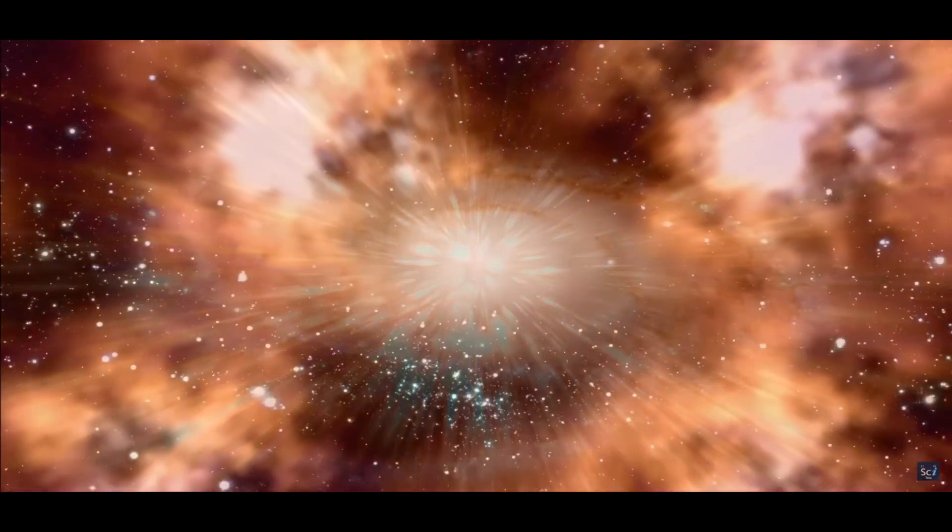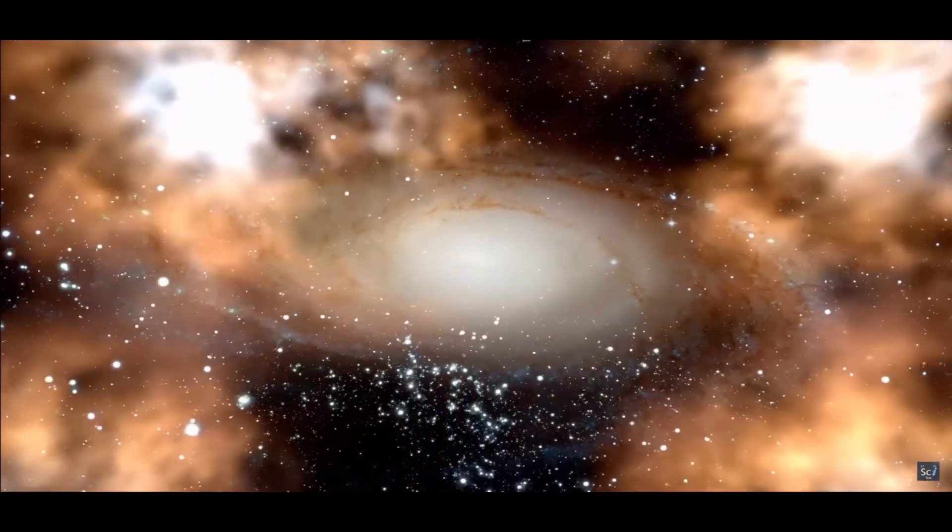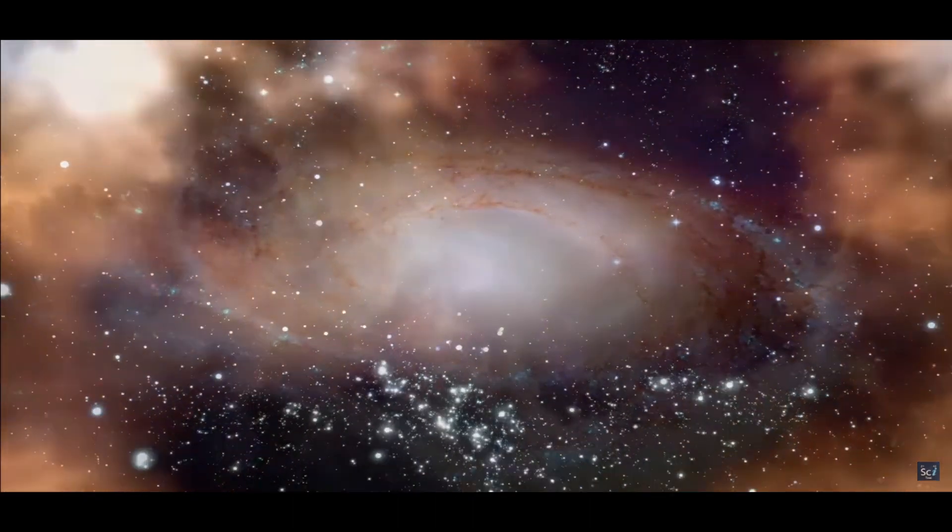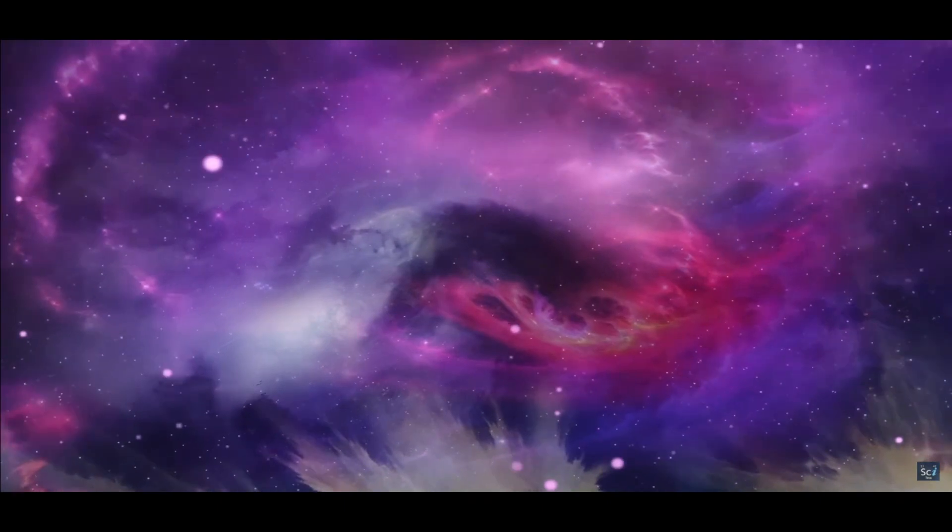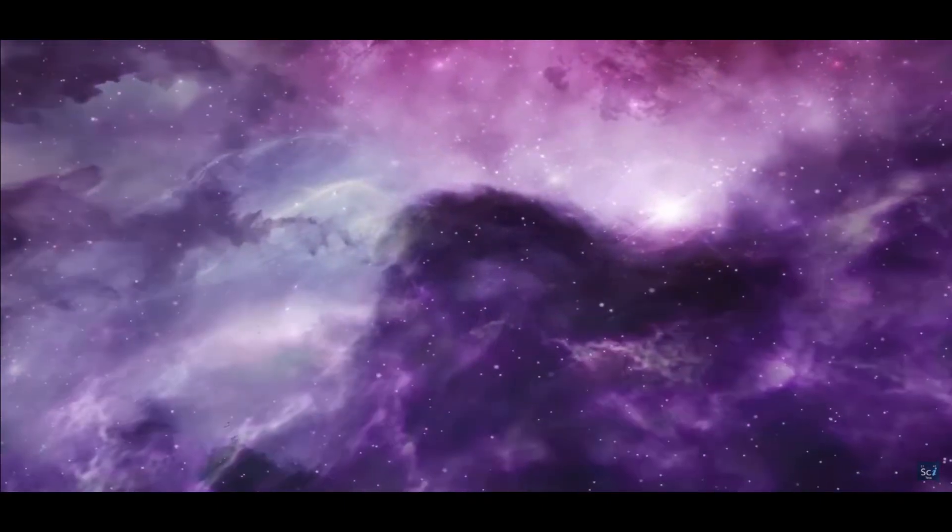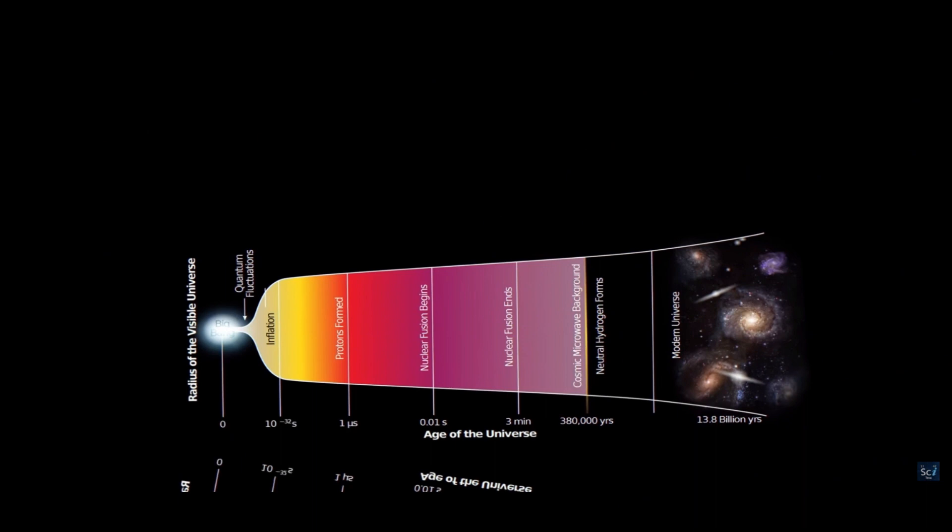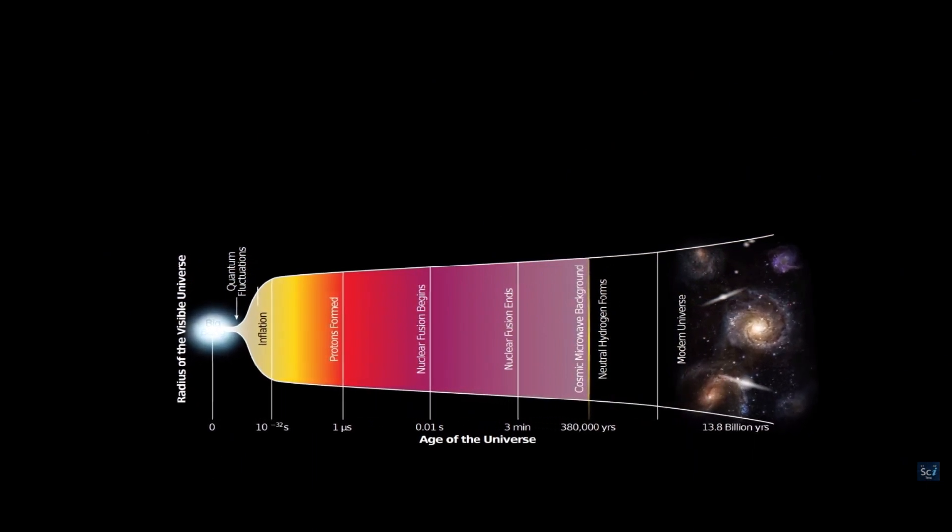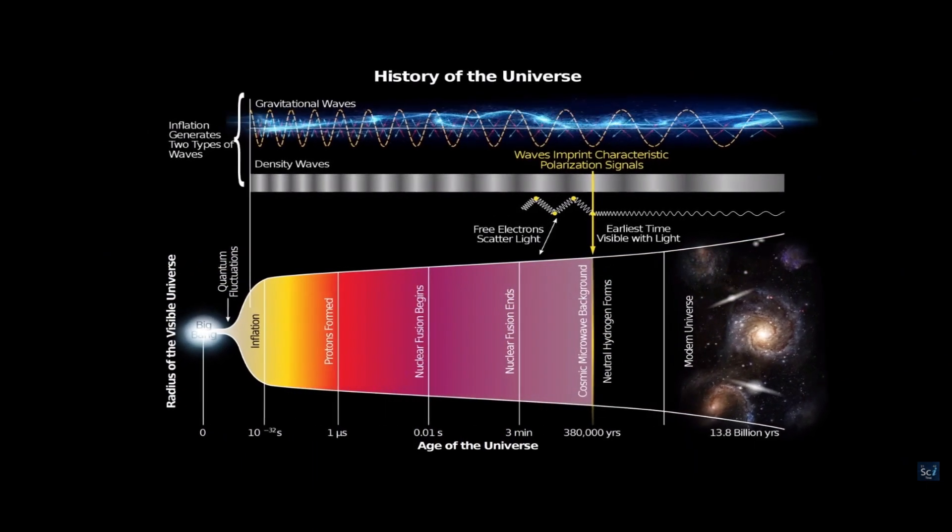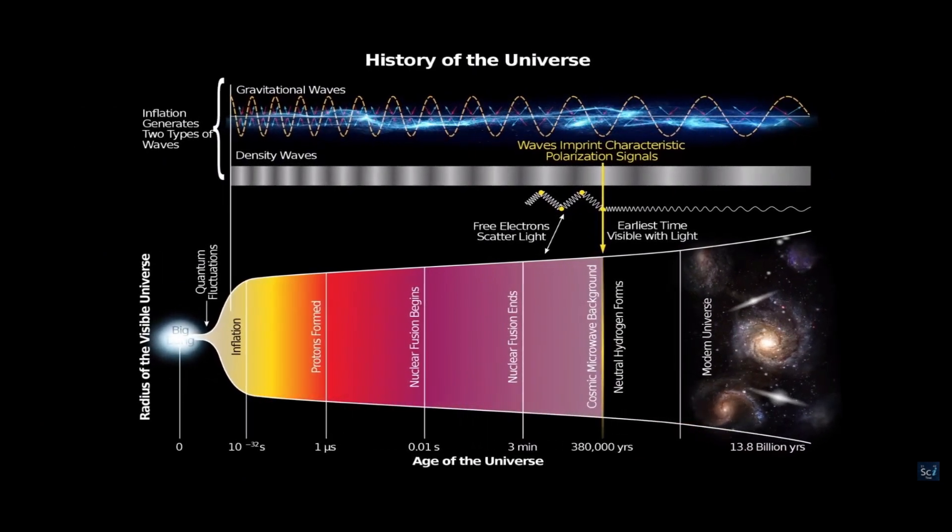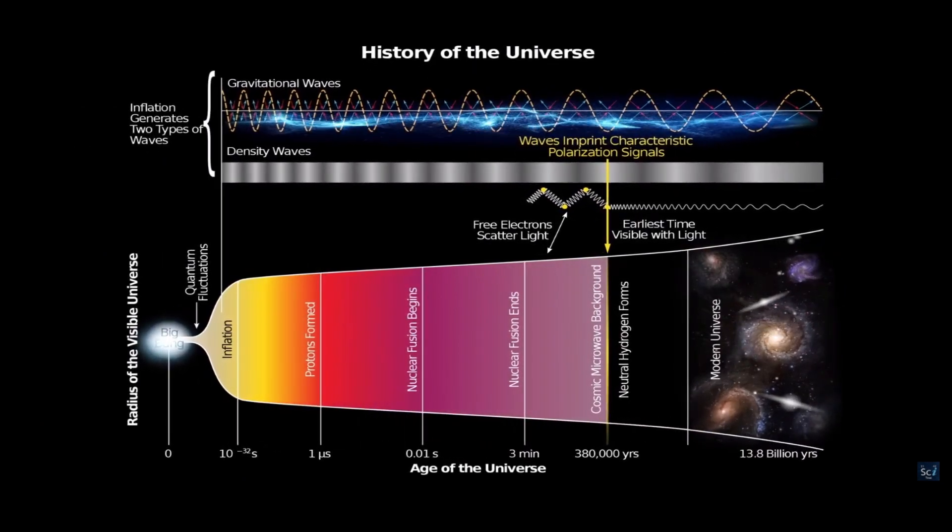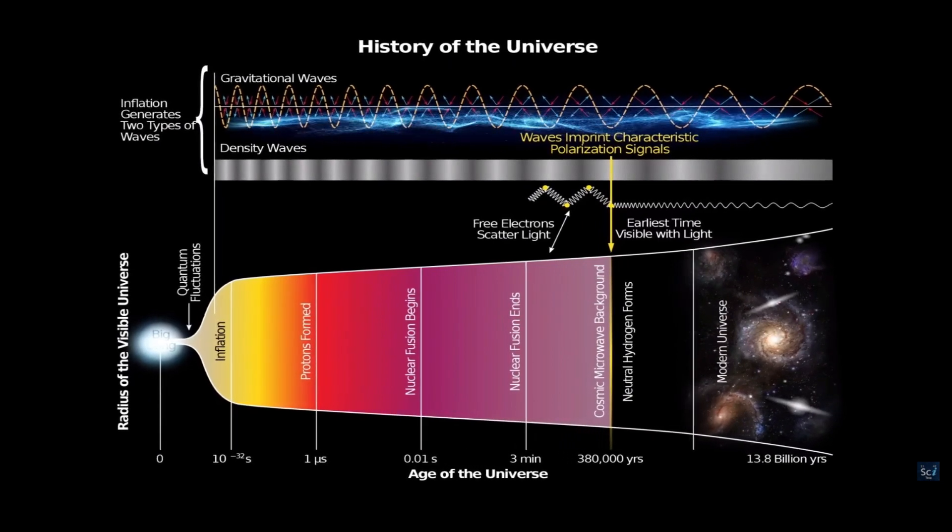Another fascinating alternative theory proposes a cyclic universe model, where the universe undergoes an eternal cycle of creation, expansion, contraction, and subsequent rebirth. In this scenario, the Big Bang would represent just one phase of an endless series of cosmic cycles. Each cycle begins with a contraction, culminating in a big crunch, followed by a new Big Bang, giving rise to a never-ending cosmic dance.